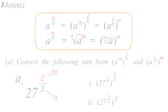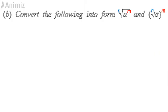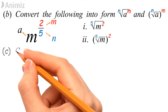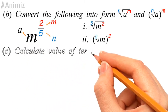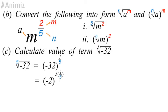Example B: convert the following into the specified forms. By comparing with the formula, m is a, 2 is m, and 5 is n in this example. Example C: calculate the value of the fifth root of −32. First, write it as (−32)^(1/5). To simplify, change −32 to (−2)^5. Multiplying the indices gives 1. Finally, the answer is −2.